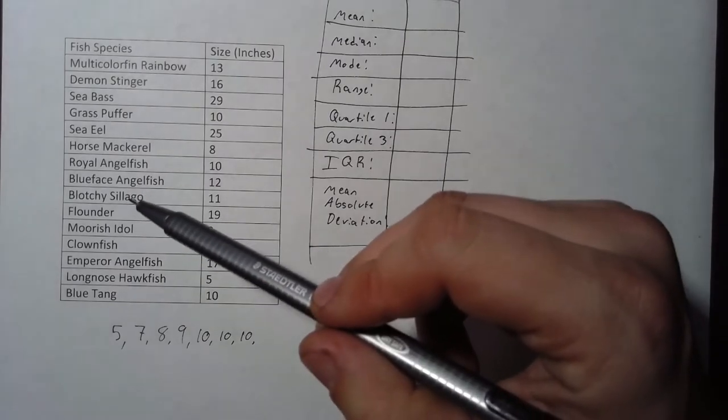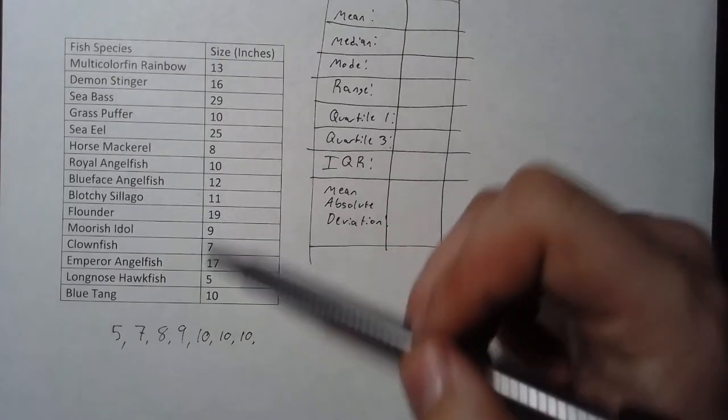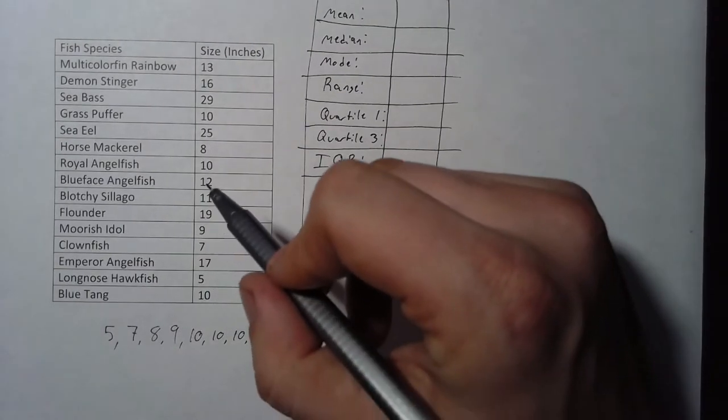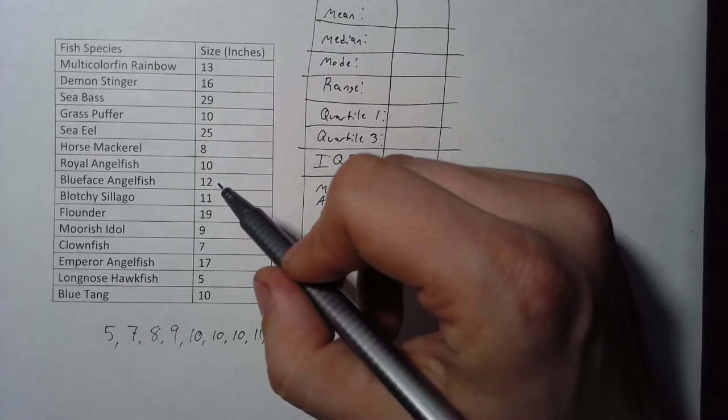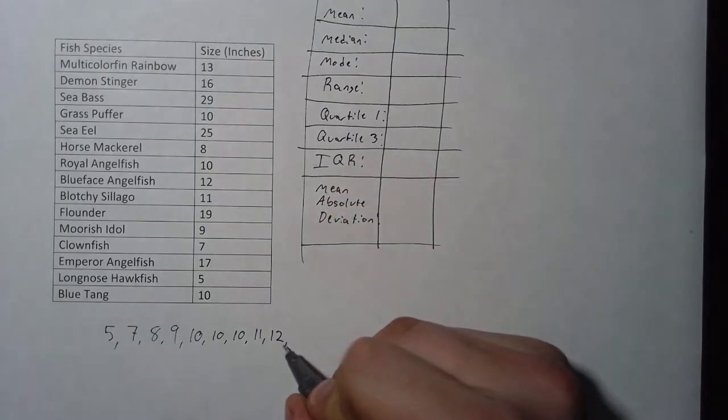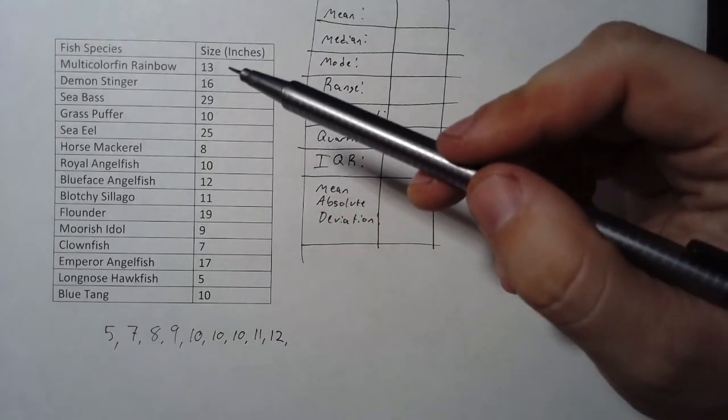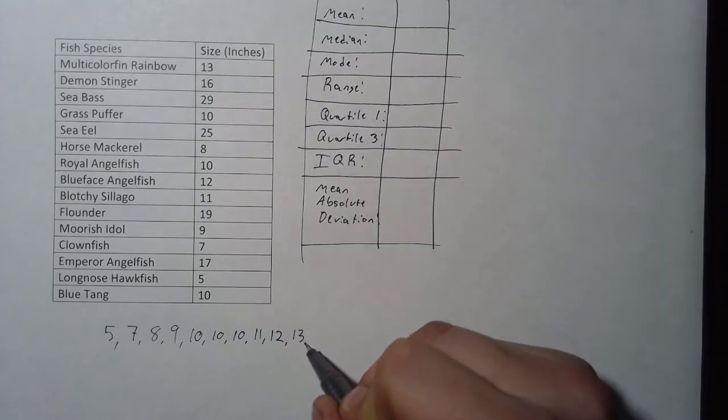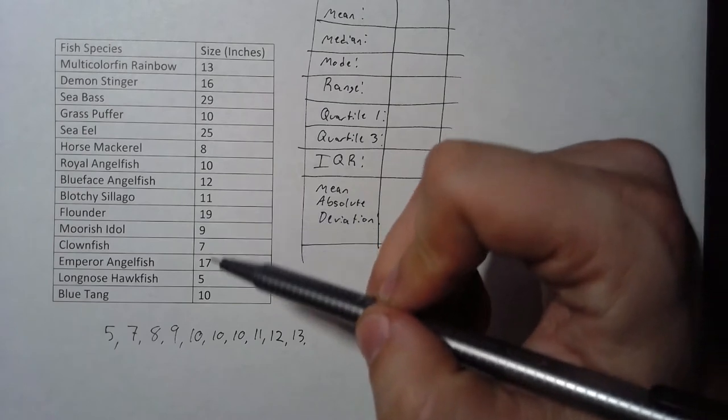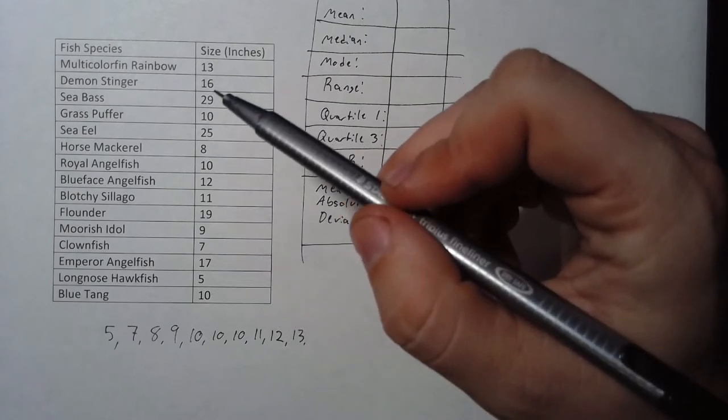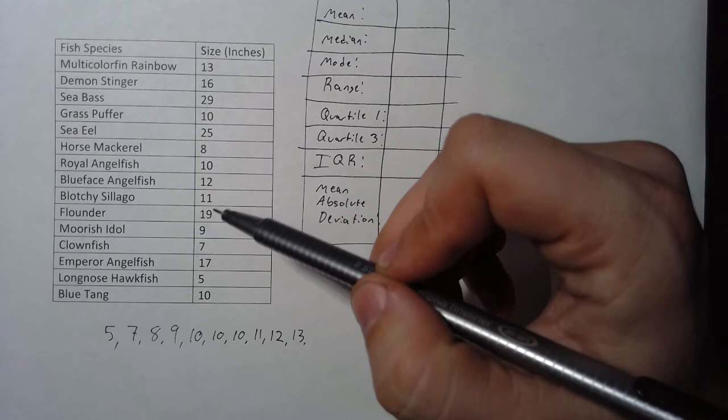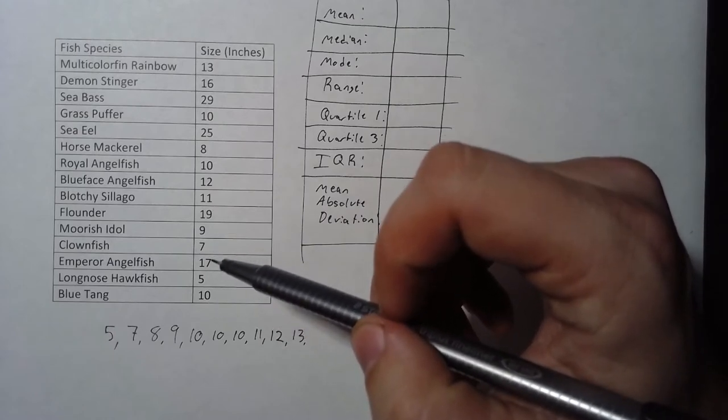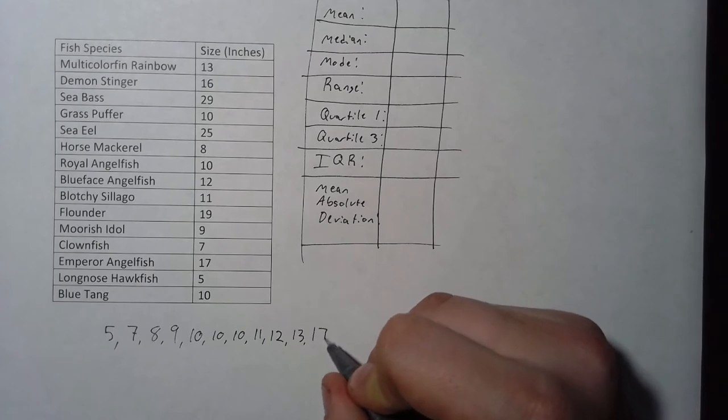Next, we've got the blotchy siago, or silago. I might be saying it wrong. That's 11 inches long. Next, we have the blue face angelfish. Then comes the multicolor fin rainbow fish. Then, the next largest fish. So we got 13 inches. No 14. No 15. No 16. Looks like 17 is the next largest, with the emperor angelfish.